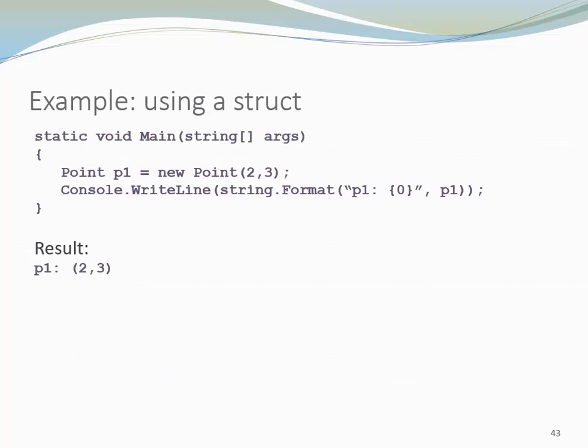Now let's have a look at using structs. So here I use the constructor to create a point. I assign it to a variable p1 of type Point. And I print it using the familiar syntax string format. Not surprisingly, it shows me that my point p1 has the coordinates 2,3.